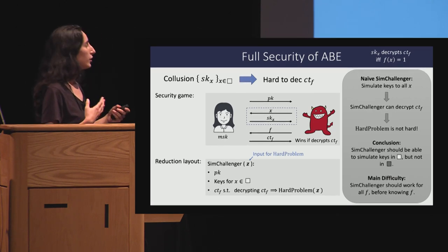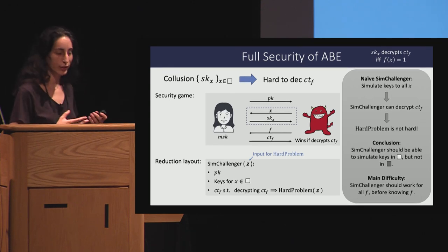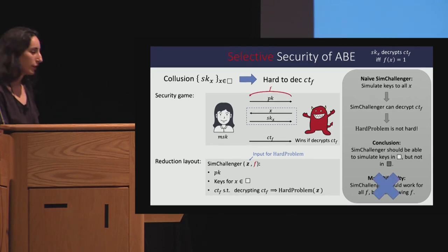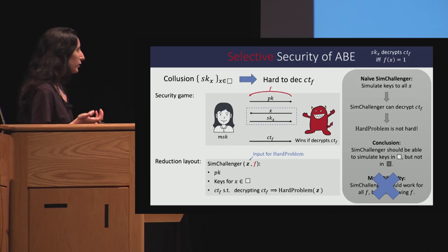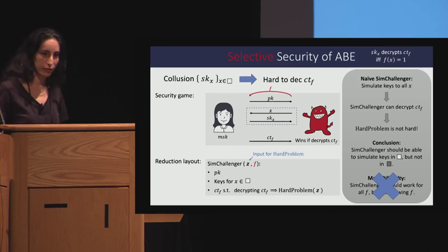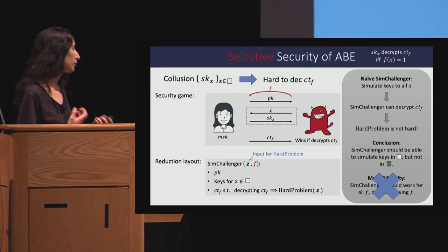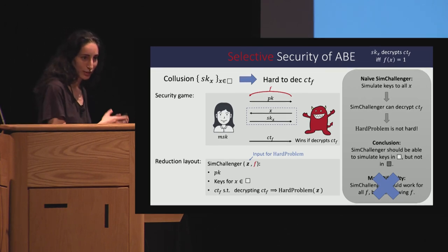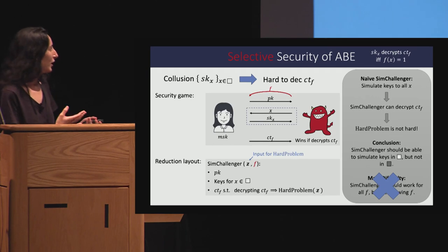This is why getting full security is challenging. The immediate way to avoid this issue is to use the relaxed notion of selective security, where we simply require the adversary to announce f before the game even begins. It doesn't make it trivial to come up with a selectively secure scheme, but it makes the problem easier.